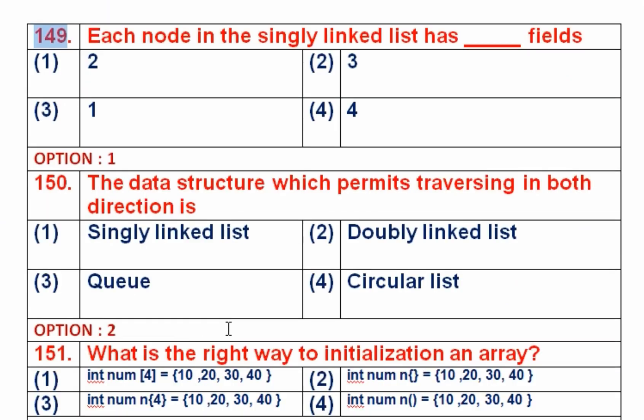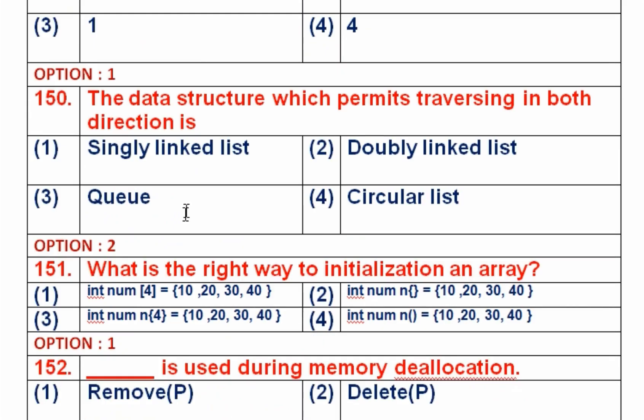Question number 149: Each node in a singly linked list has how many fields? In a singly linked list, each node has two fields: one called the data field, which keeps the necessary data, and another called the link field, which contains the address of the next node in the linked list. So there are only two fields, and option 1 is the right answer.